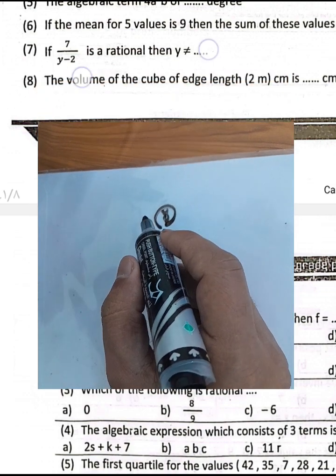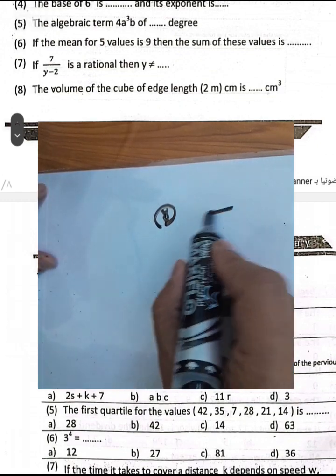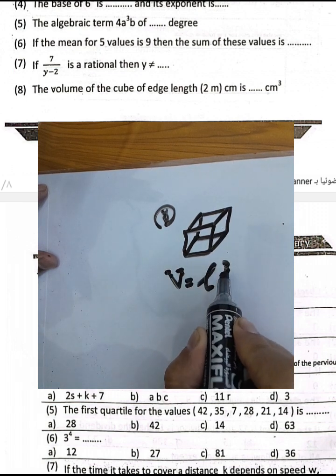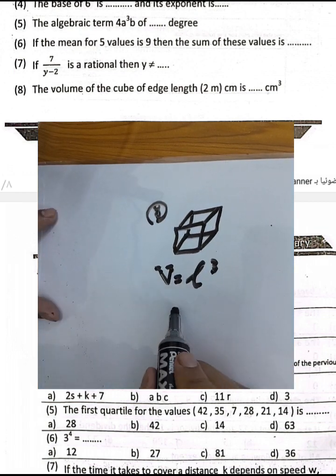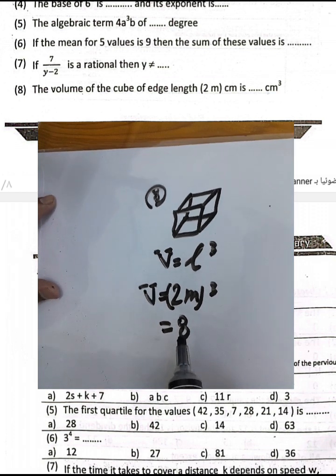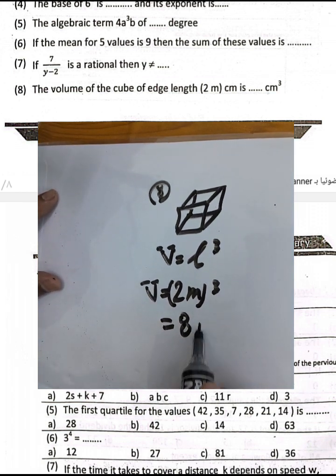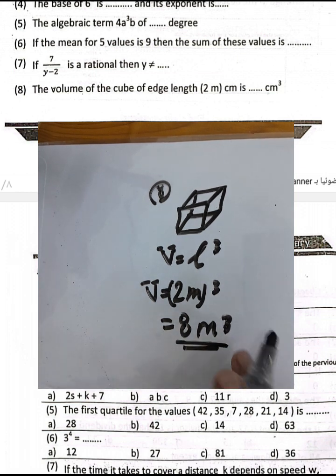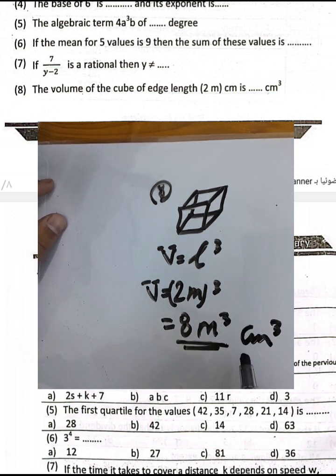Question number 8: find the volume of a cube with side length 2 meters. Volume equals the side length cubed: 2m to the power of 3 equals 2 times 2 times 2 equals 8, and m³ remains. The volume is 8m³ cubic meters.